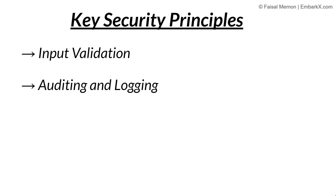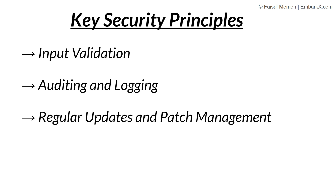Sixth, auditing and logging: implement logging and auditing mechanisms to record security-related events and user actions. In production-grade environments a dedicated logging module tracks who did what and when — for example, if an admin creates a product or changes access roles, that is logged. This enables teams to investigate security incidents or breaches. Finally, regular updates and patch management: keep software dependencies, libraries, and frameworks up to date with the latest security patches, as new updates fix newly discovered vulnerabilities.